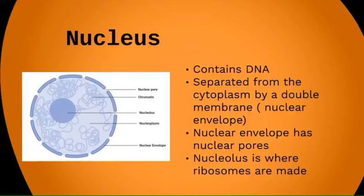For now, all you really need to know is that the nucleus is the part of the cell that contains all the genetic information. Within each nucleus there are different areas that are more darkly staining, called nucleoli — singular nucleolus — and these are where ribosomes are produced within the nucleus.